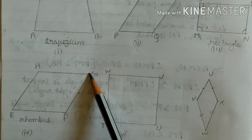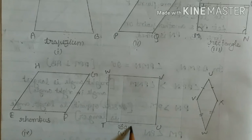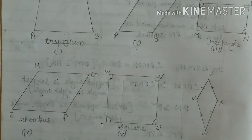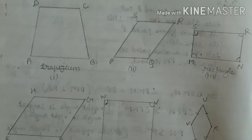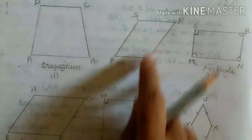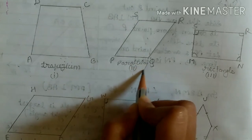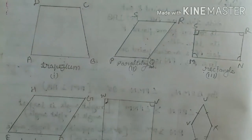All sides are equal, and here there are 90 degree angles. So what do we say? Square. This is square. So you can identify: this is your parallelogram, this is a rectangle, this is square.